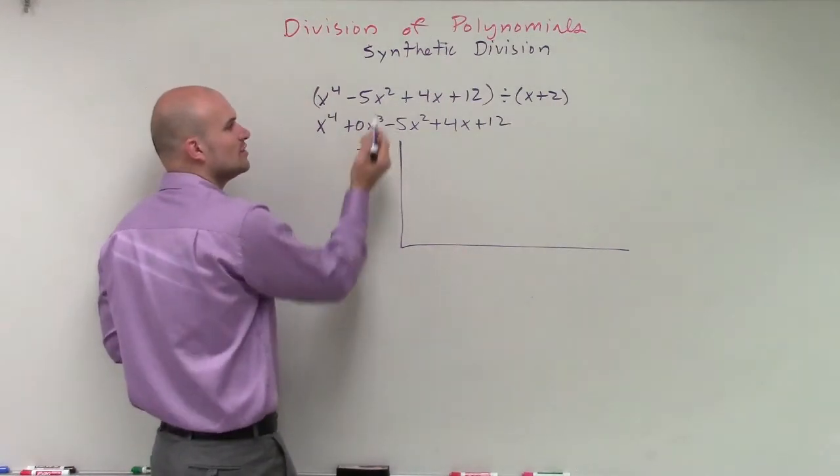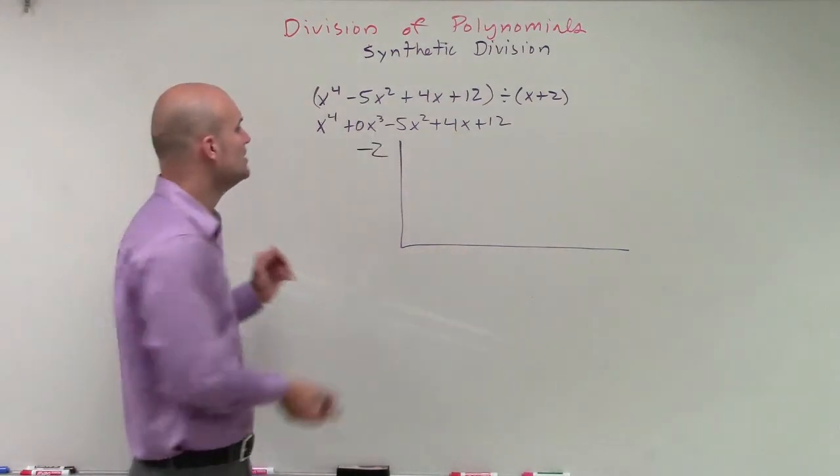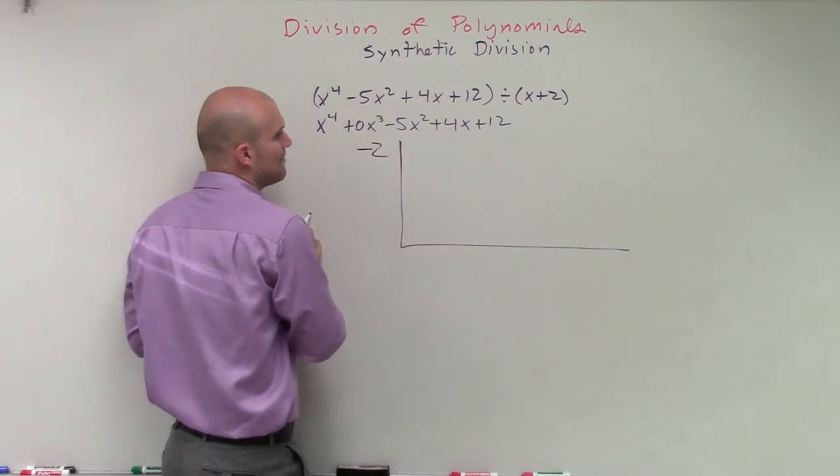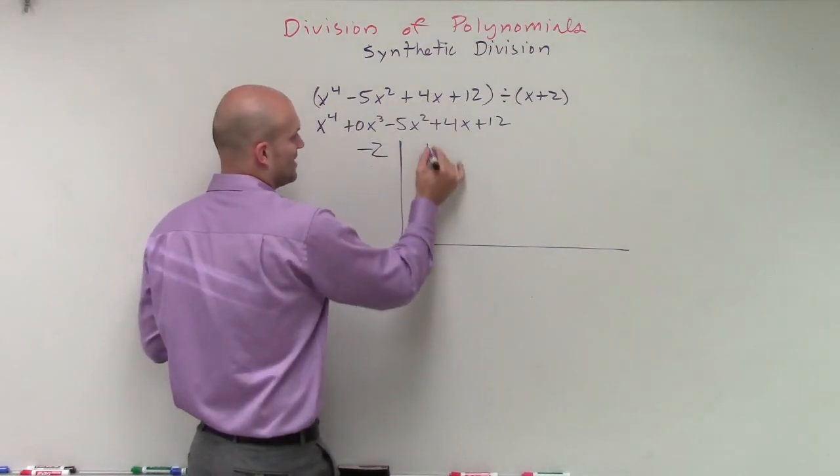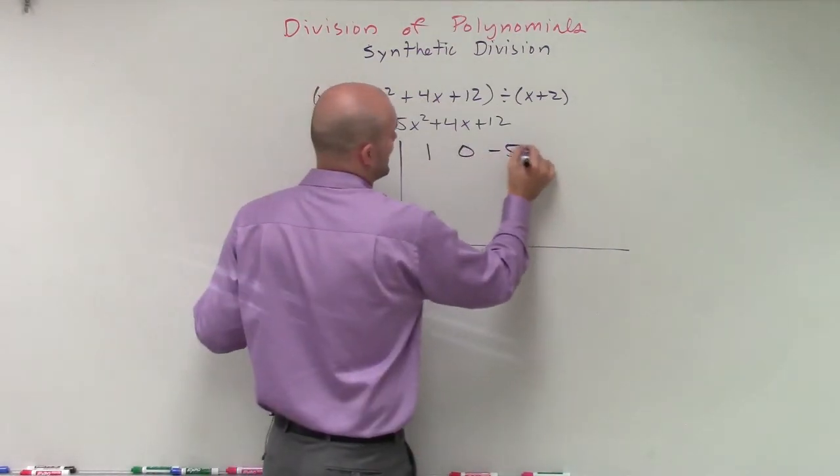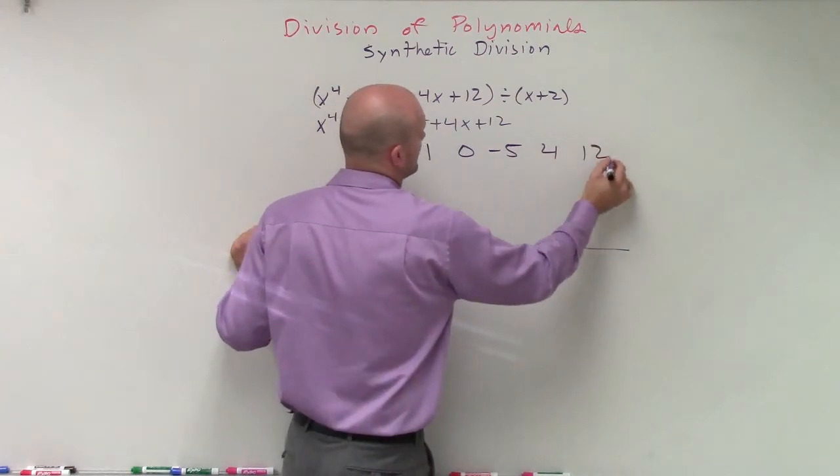If we were to put this in descending order, 0 times x cubed is just going to be 0, but we need to make sure we include that place value. So we'll have a 1, 0, negative 5, 4, and 12. All right?